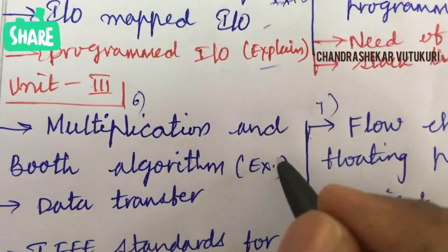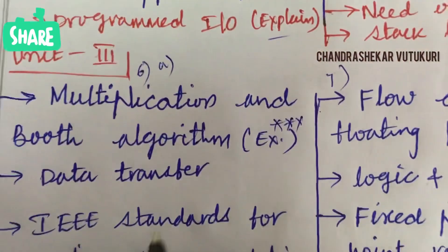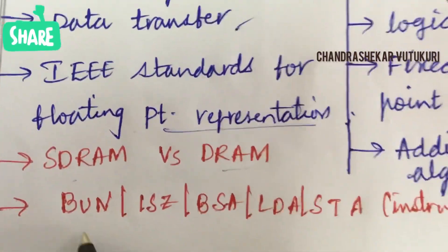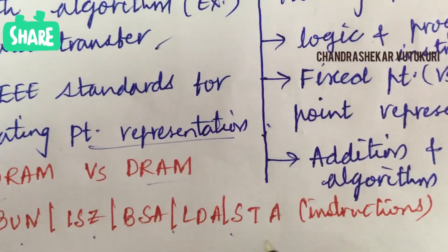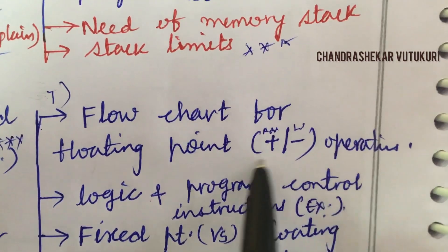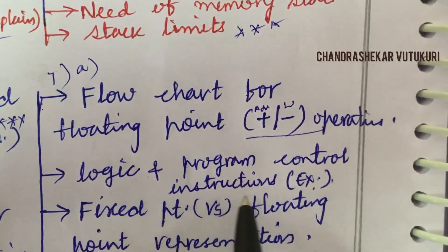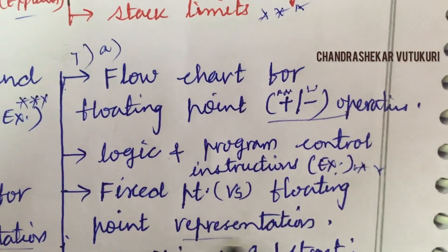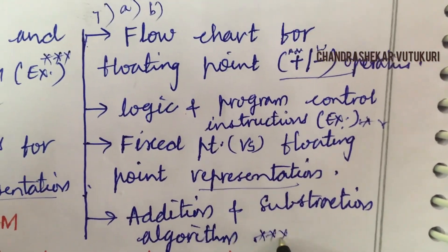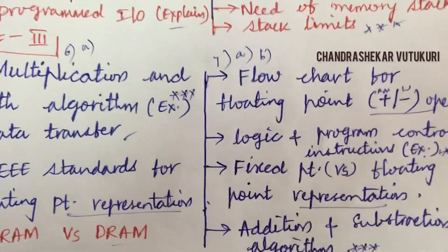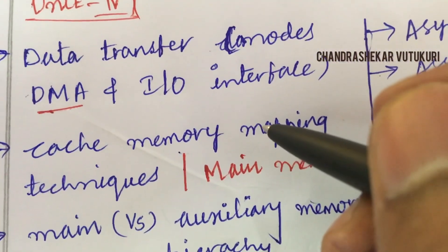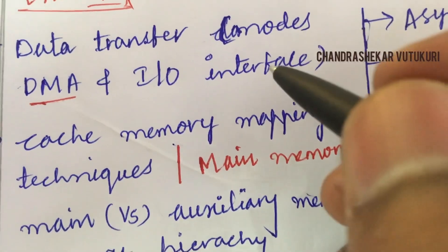Multiplication and Booth's algorithm is the top question for 6A. Define the term data transfer; IEEE standards for floating-point representation may be a short question. SDRAM versus DRAM, and instructions like BUN, BSA, LDA, STA — explain them in short question form. The flowchart for floating-point addition instruction operation may be the 7th question. Logic and program control instructions along with examples, and fixed-point versus floating-point representation, may be the B question. Addition and subtraction algorithm is also a very important question.